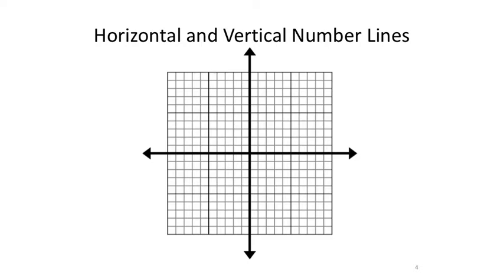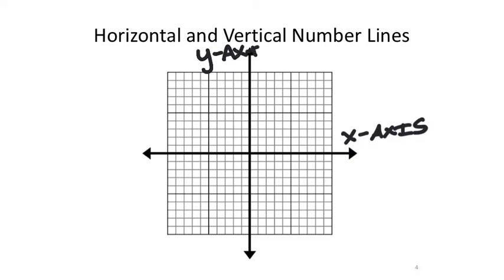The horizontal line is known as the x-axis, which tells us that all the values on this horizontal number line are x values. The vertical number line is known as the y-axis. You could say x is Main Street and y is Center Street — you could switch, it doesn't matter.